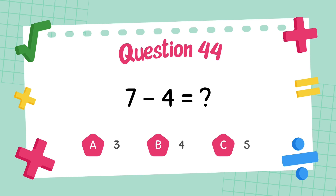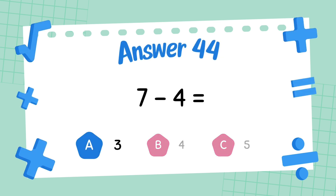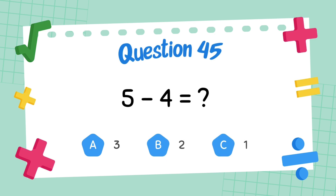What is 7 minus 4? The answer is 3. What is 5 minus 4?